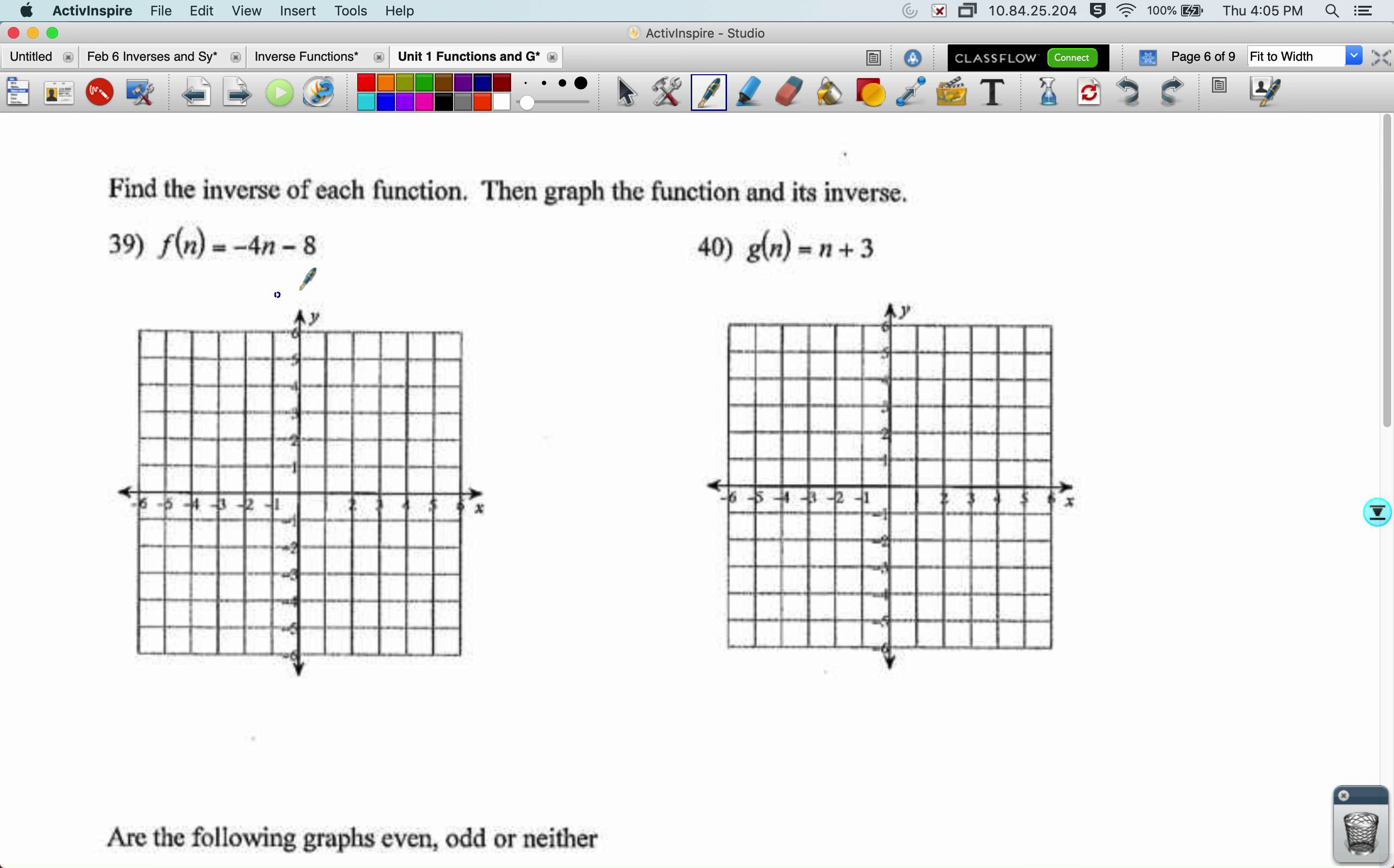All right. Find the inverse of each function, then graph the function and its inverse. So practice this again. Y equals negative 4x minus 8. x equals negative 4y minus 8. x plus 8 equals negative 4y. y equals x plus 8 over negative 4. The inverse of f of n equals n plus 8 over 4. I'm going to plot the original function. It's got a y-intercept of negative 8. That's somewhere down here. Slope of negative 4. So I'm going to go backwards 1 up 4. So I was at negative 8, negative 7, negative 6, negative 5, negative 4. Keep that slope going.